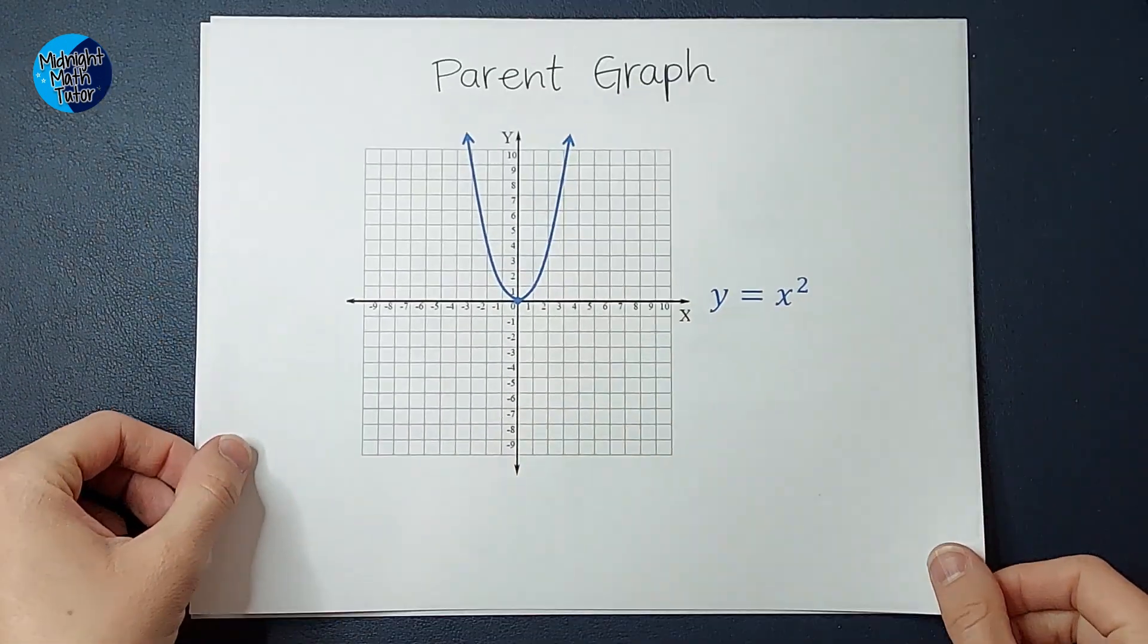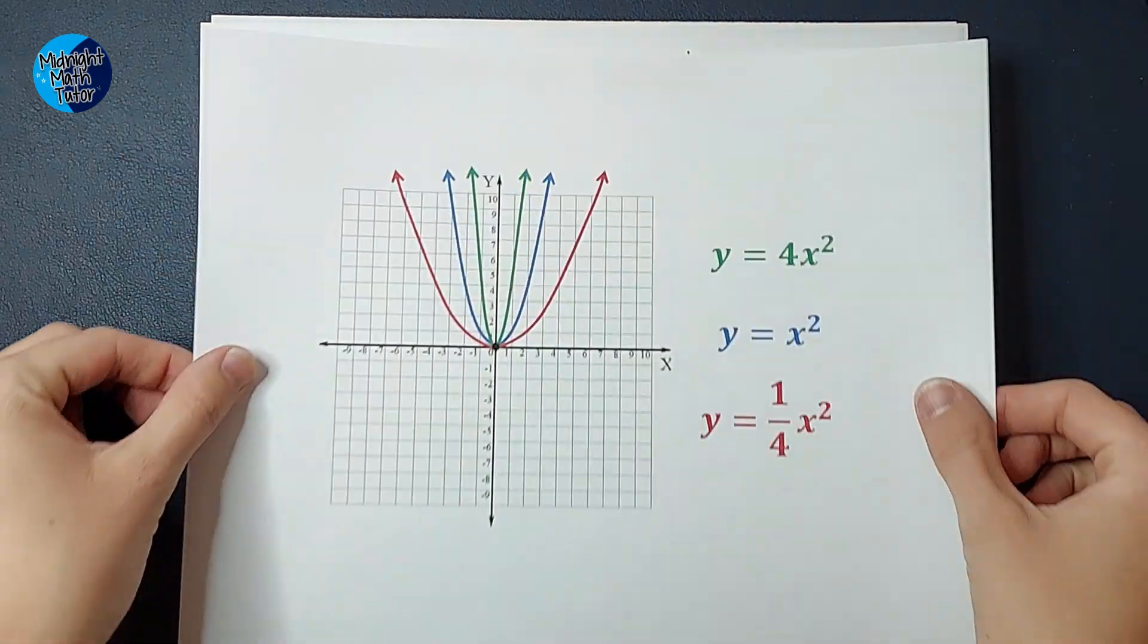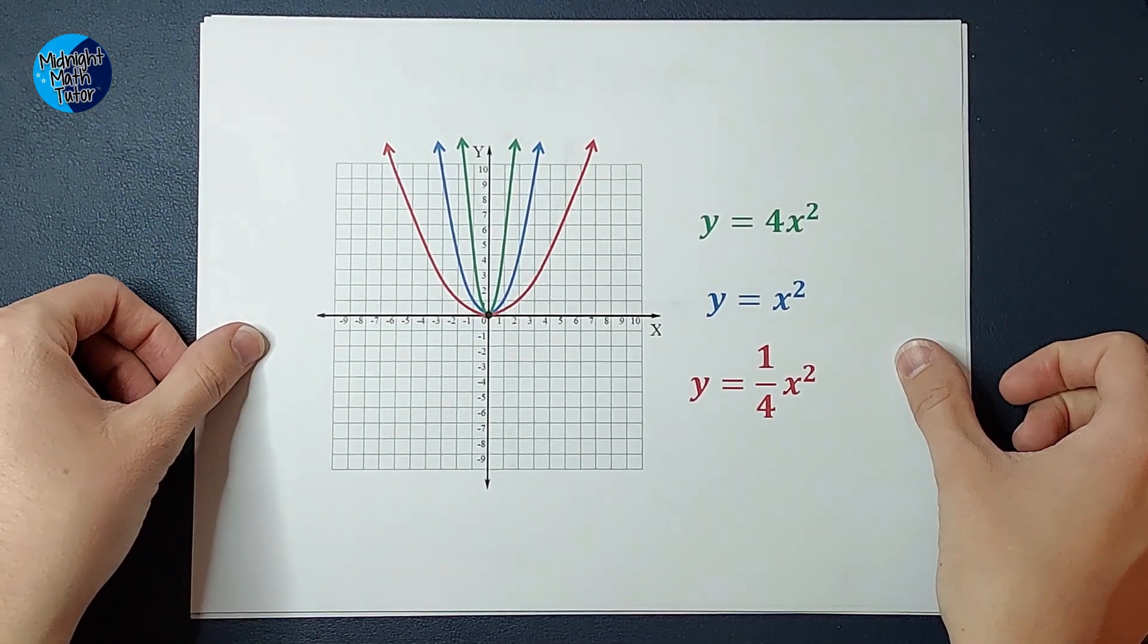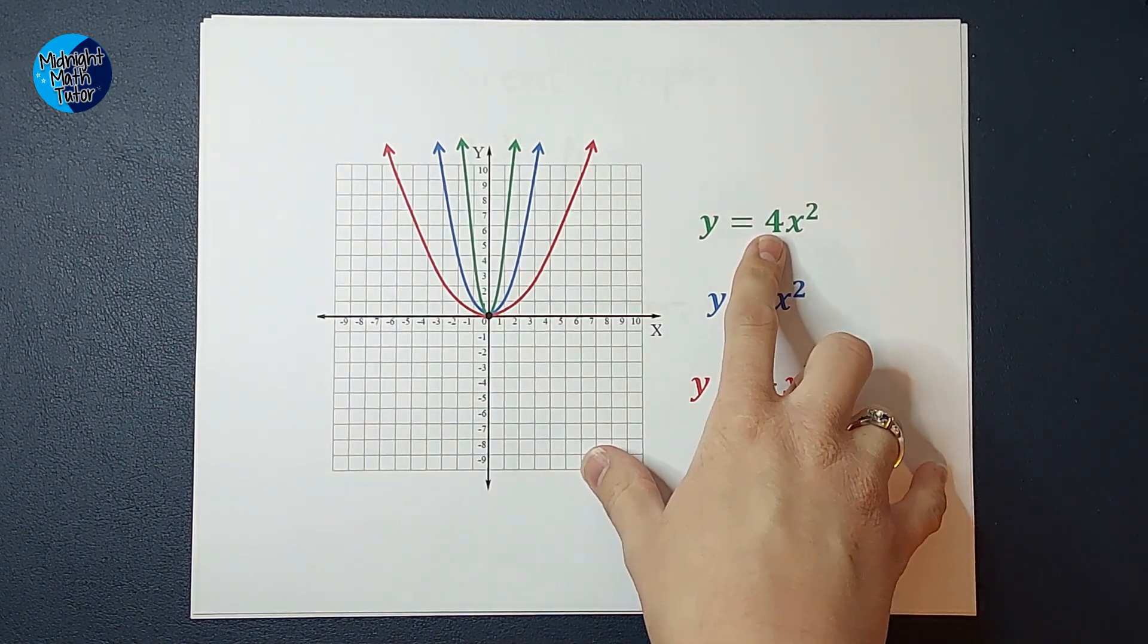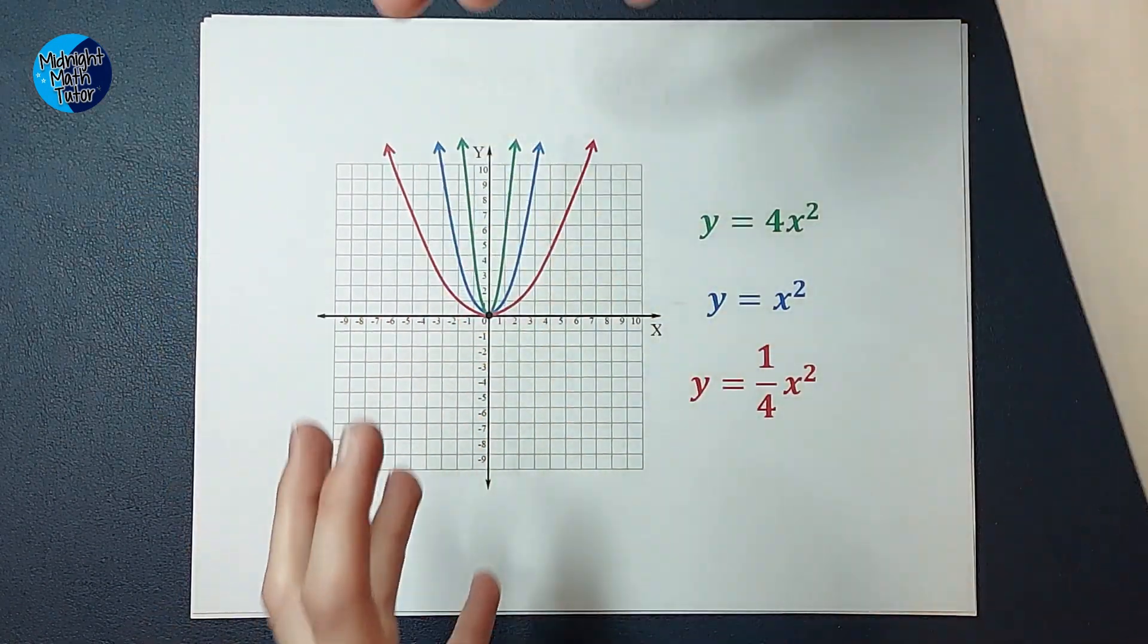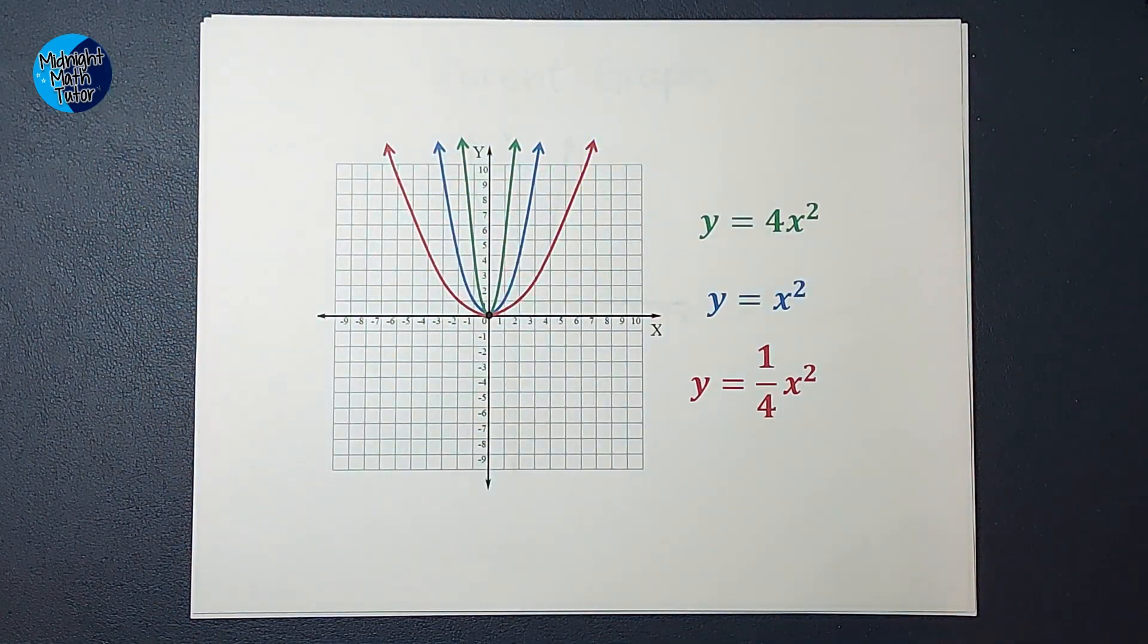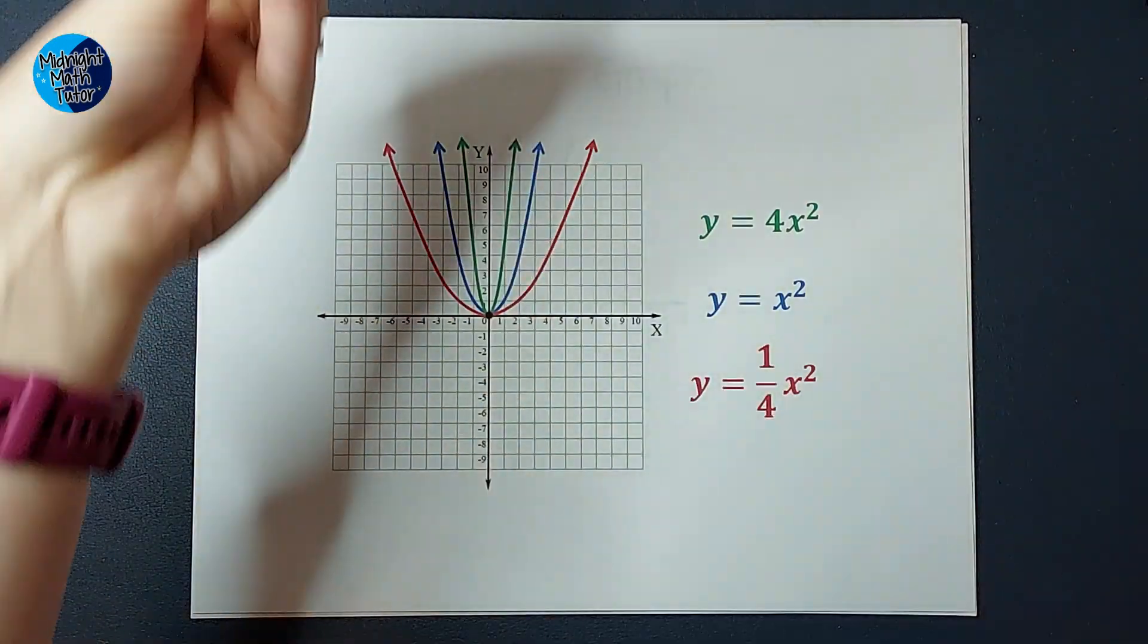So remember our parent graph? Oh, it's so nice. Now look at these guys. That blue one is that same parent graph I just showed you. If you look at the green, you see there's a four there. And do you notice how the green graph is, what is the word, they say stretched.